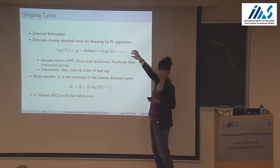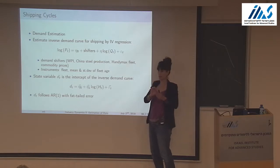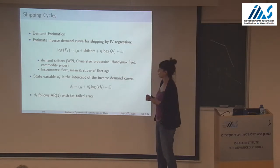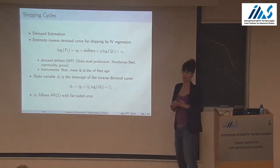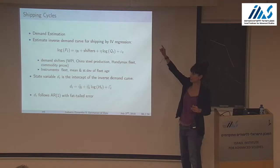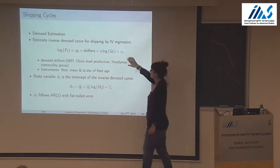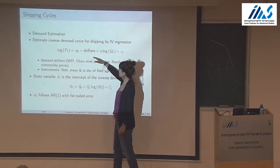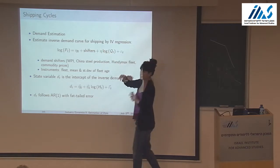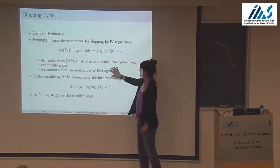We really need a state variable to capture macro demand movement. My original thought was to use world industrial production, but it's essentially a straight line — not helpful for generating fluctuations. Instead, this approach lets me estimate the demand curve and take its intercept as what is moving every period, generating the cycles.